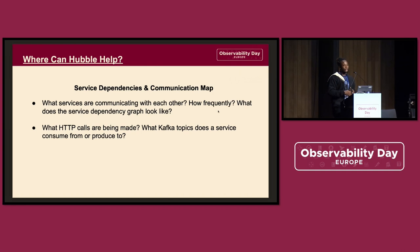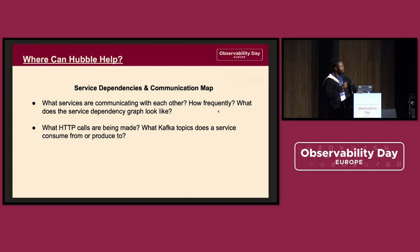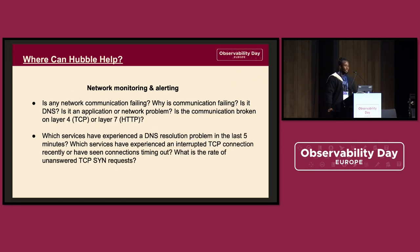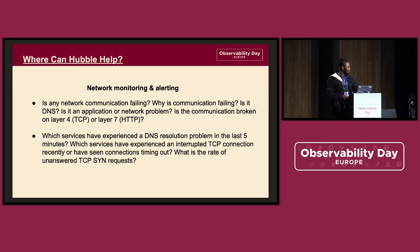Where can Hubble help? For service dependencies, Hubble can answer what services are communicating with each other, how frequently, and what the service dependency graph looks like. Hubble can also show what HTTP calls are being made, thanks to the L7 visibility it provides, and some of your Kafka topics. For network monitoring, Hubble can show where certain communications are failing, what communication is failing, and whether it's DNS — and it can always answer that particular question.